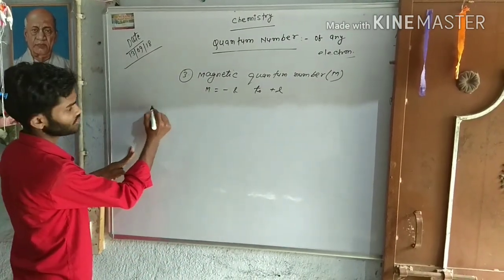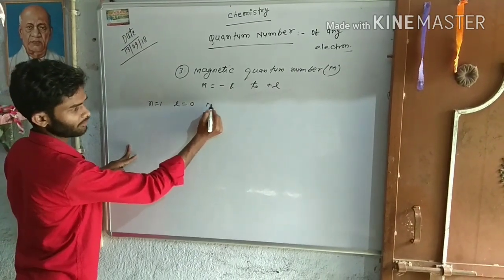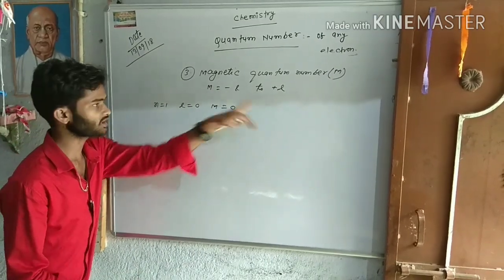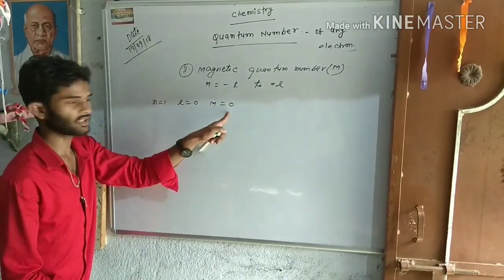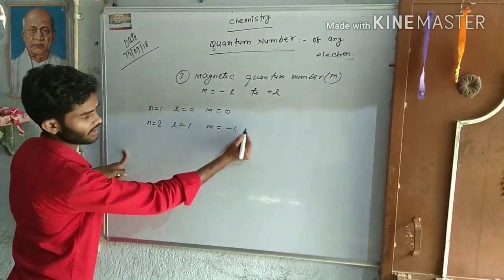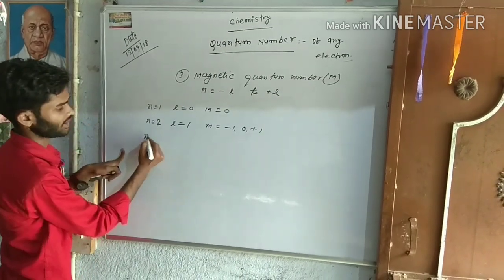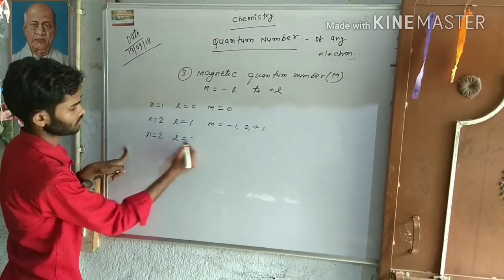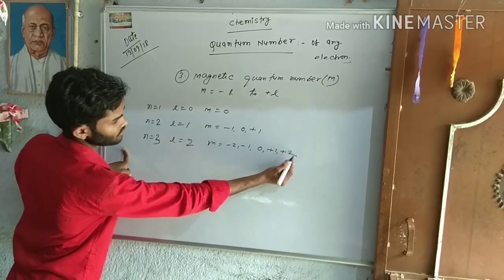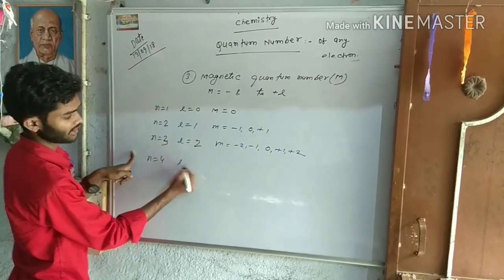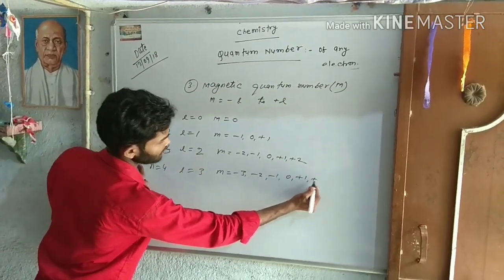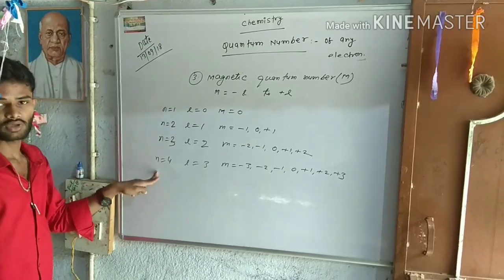जब N=1, L=0 था, तो M = 0 (यानि −0 से +0)। जब N=2, L=1, तो M = −1, 0, +1। जब N=3, L=2, तो M = −2, −1, 0, +1, +2। जब N=4, L=3, तो M = −3, −2, −1, 0, +1, +2, +3। This is magnetic quantum number.